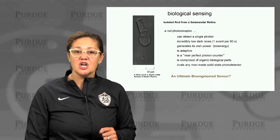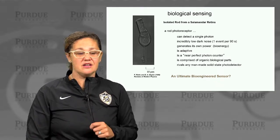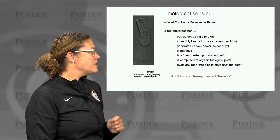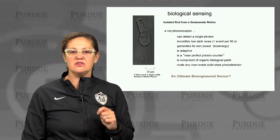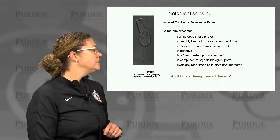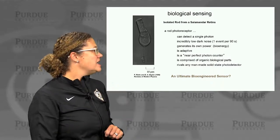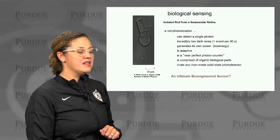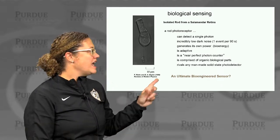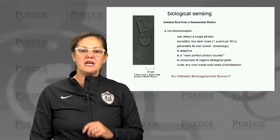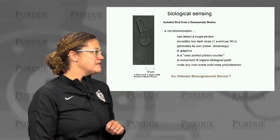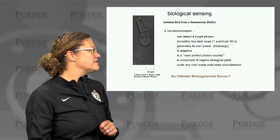In a prior lecture we did a case study looking at the photoreceptor in the retina. A rod photoreceptor as a sensor can detect a single photon with incredibly low dark noise, essentially generates its own power from molecular food, is adaptive, and is a near perfect photon counter. It's comprised of organic biological parts organized with a particular microstructure to enable these functions, and in many ways rivals our human-made solid-state photo detectors. So the photoreceptor serves as an example of an ultimate engineered biosensor.